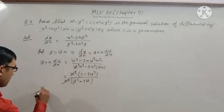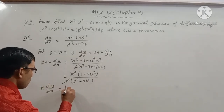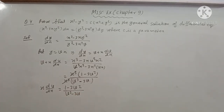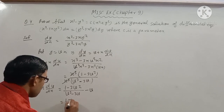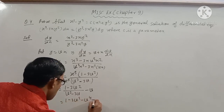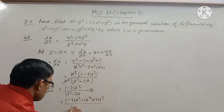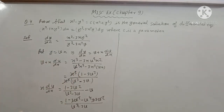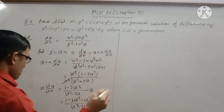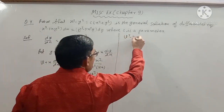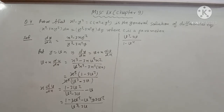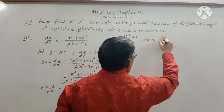The x³ terms cancel. So x(dv/dx) = (1 - 3v²)/(v³ - 3v) - v. Combining terms: x(dv/dx) = (1 - 3v² - v⁴ + 3v²) / (v³ - 3v). Separating variables: (v³ - 3v)/(1 - v⁴) dv = dx/x, which becomes (3v - v³)/(v⁴ - 1) dv = dx/x.